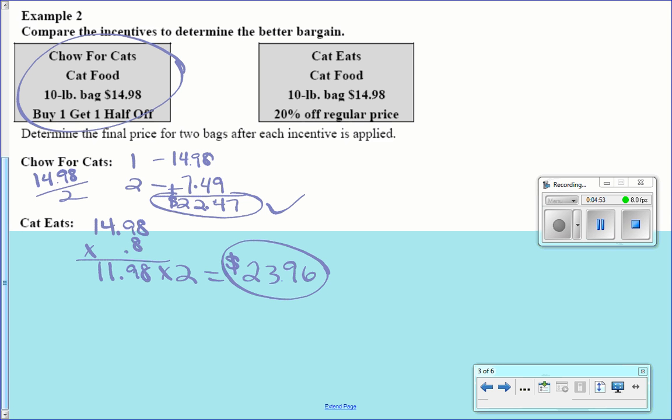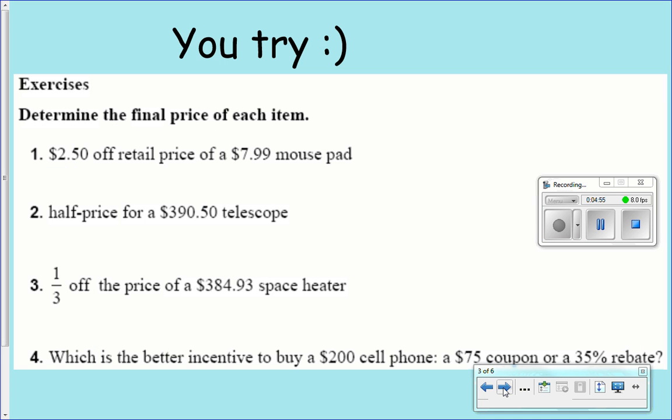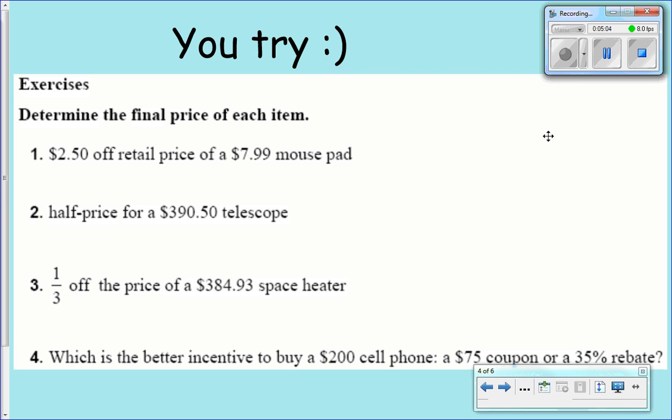All right. So you have some problems. Four of them determine the final price of each item. Number one, $2.50 off retail price of a $7.99 mouse pad. Good math. Just show them what you put in your calculator.